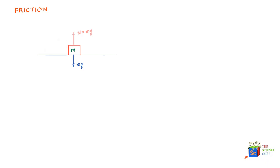Now let's say you push this mass with a certain force F. In the first instance, let the magnitude be 10 newtons. What you would see is that the mass does not move, because there is a force of friction opposing the force you are applying. The force of friction acts in the opposite direction, and if you put a force of 10 newtons, the friction force is also 10 newtons.